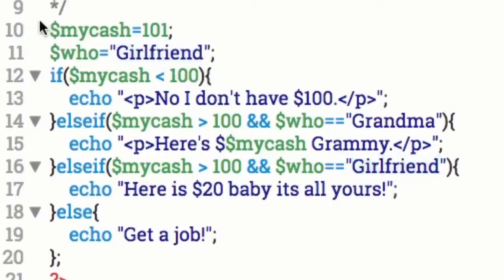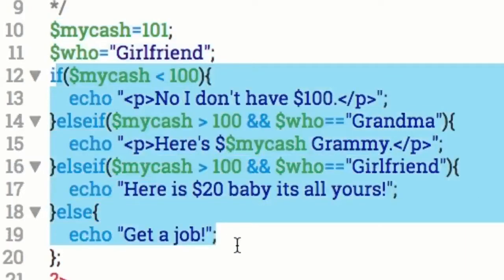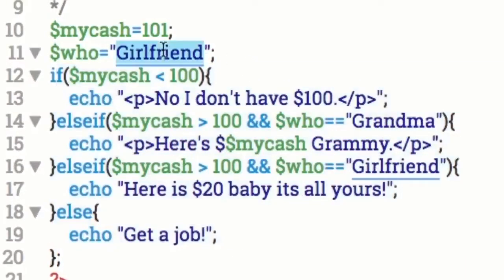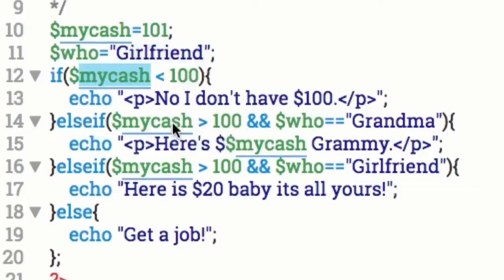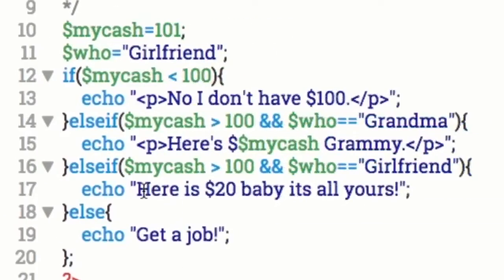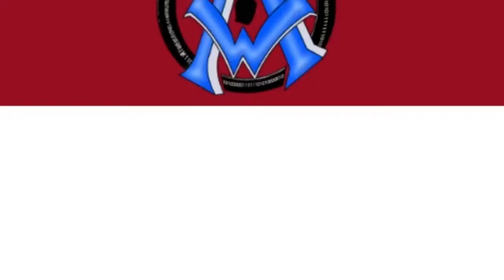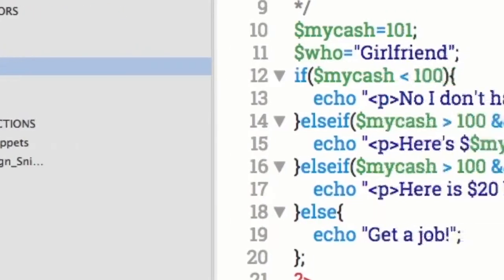Let's put the girlfriend in up here. This is the situation — this is what we do with that situation from here down. So now the girlfriend's asking. The script goes through: if cash is less than $100 — no; else if cash is greater than $100 and grandma's asking — give Grammy the cash; else if cash is greater than $100 and girlfriend's asking — 'Here's $20, baby, it's all yours.' Command S, refresh. 'Here's $20, baby. It's all yours.' We can put that in P tags — she is your girlfriend.